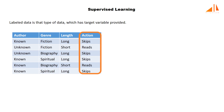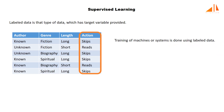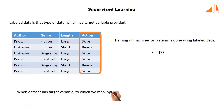Now we have enough information to define supervised learning. It is that category of machine learning algorithms in which training of machines or systems is done using labeled data, or data which has target variables. In such learning, a machine learning model maps input variable x to an output variable y using some mapping function f. Here f is the mapping function which takes input x and produces output y, also called the hypothesis. The basic aim is to approximate this mapping function so that when there is new input data, the corresponding output can be predicted.